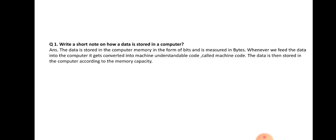The first question is: write a short note on how data is stored in a computer. Answer: The data is stored in the computer in the form of bits and is measured in bytes. Whenever we feed the data into the computer, it gets converted into machine understandable code called machine code. The data is then stored in the computer according to the memory capacity.